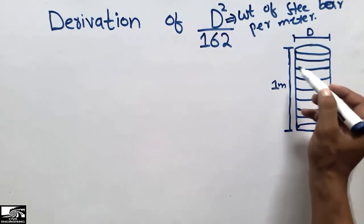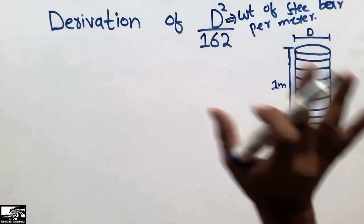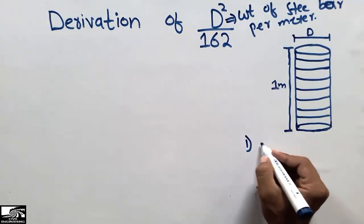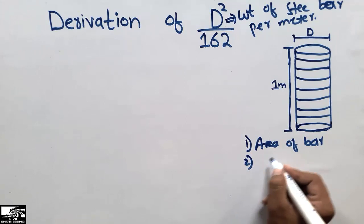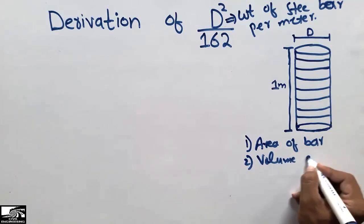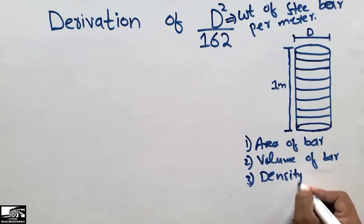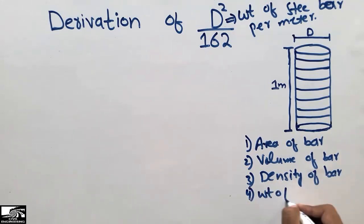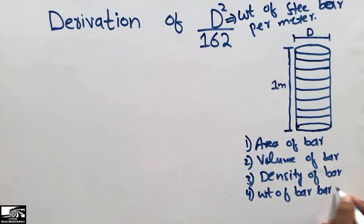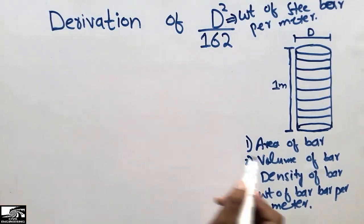Let's consider a steel bar of length 1 meter, and D is the diameter of the steel bar. We will derive this formula in four steps. Step one: find the area of the steel bar. Step two: find the volume of the bar. Step three: density of the steel bar. Step four: weight of the bar per meter. From these four steps we will derive this formula.